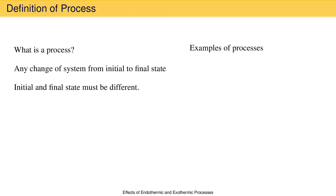Examples of processes include chemical reactions like combustion, precipitation, or acid-base neutralization. In all of these types of reactions, the system begins in some initial state, undergoes a chemical change, and ends up in some different final state. That's a process.